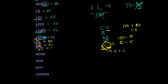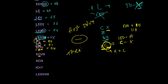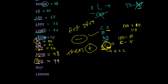For XCVIII: C is the base. First solve the minus part — 100 minus 10 = 90 — then plus 8 = 98. The rule is: first solve minus then plus. For XCIX: 100 minus 10 = 90, then plus 9 = 99.